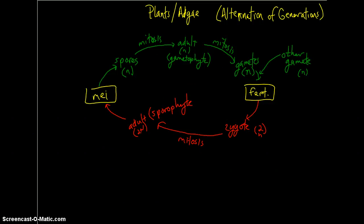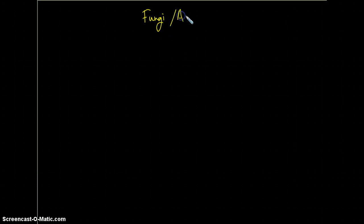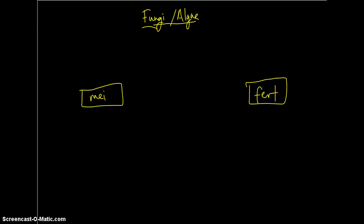Now, the third type of cycle is seen in fungi and some algae. And again, this is another alternation of generations, somewhat like what we see in plants. Okay, remember the hallmarks, there is meiosis, and there is fertilization. Process starts the same, gametes combine, you have a zygote that is diploid.